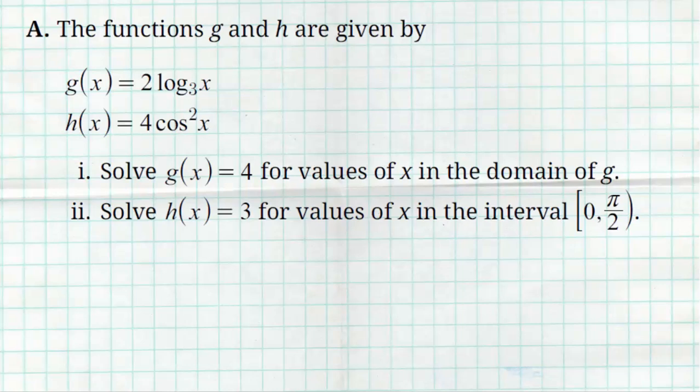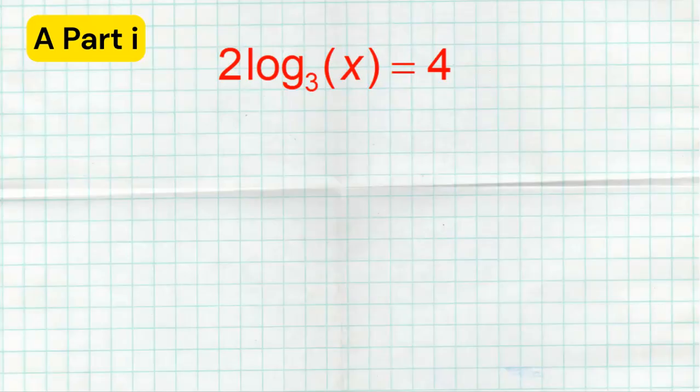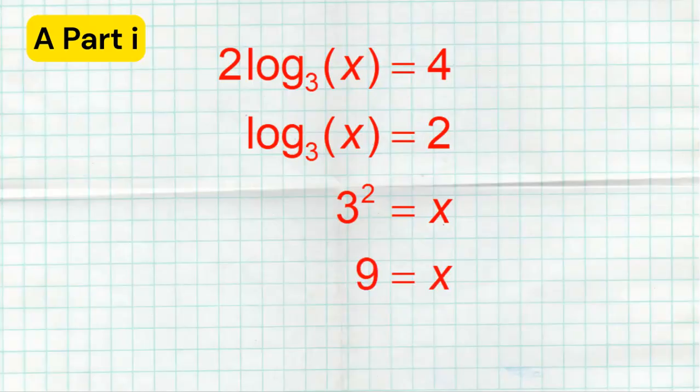We want to figure out where 2 log base 3 of x equals 4, so go ahead and start writing that out. Now we have to show our work to solve this. Remember, we cannot use a calculator. So the first thing I'm going to do is get rid of that 2 by dividing by 2 on both sides and 4 divided by 2 is 2. Then what I'm going to do is use the definition of logs to write this as an exponential equation. So I get 3 raised to the second equals x and 3 raised to the second is 9, so I guess I'm done. x equals 9.